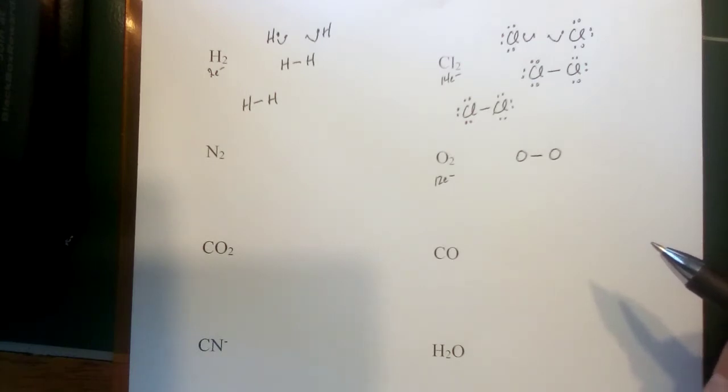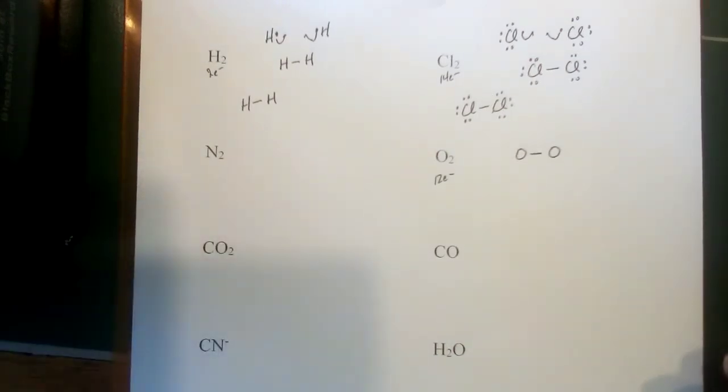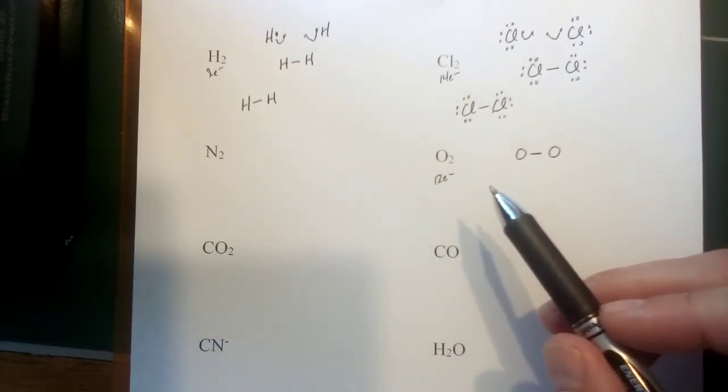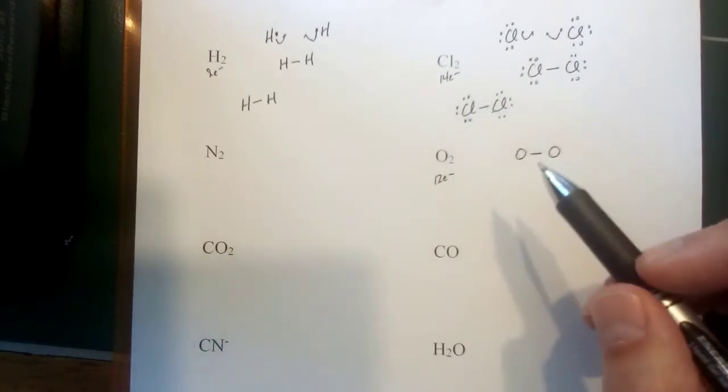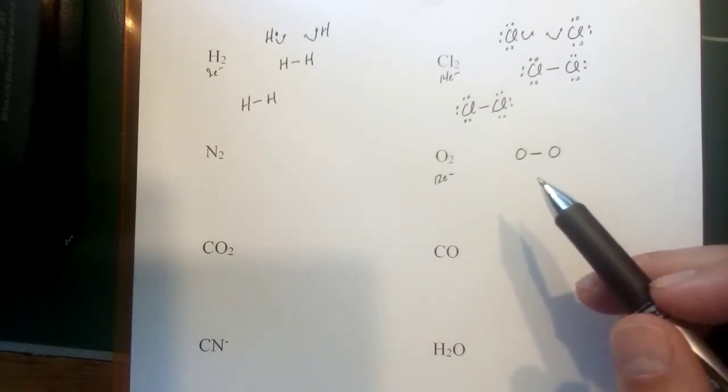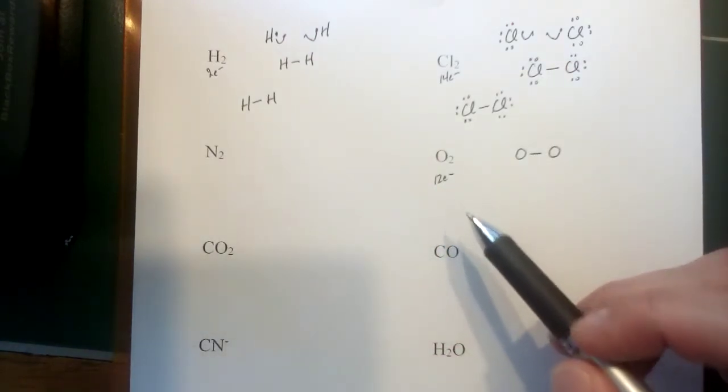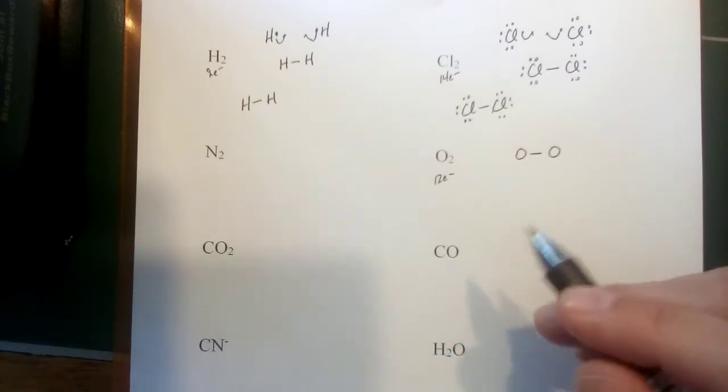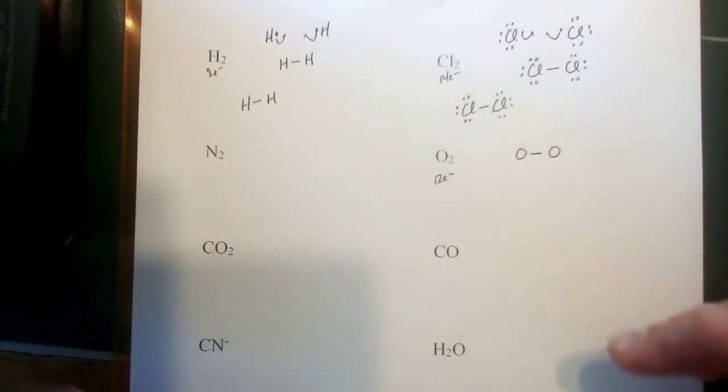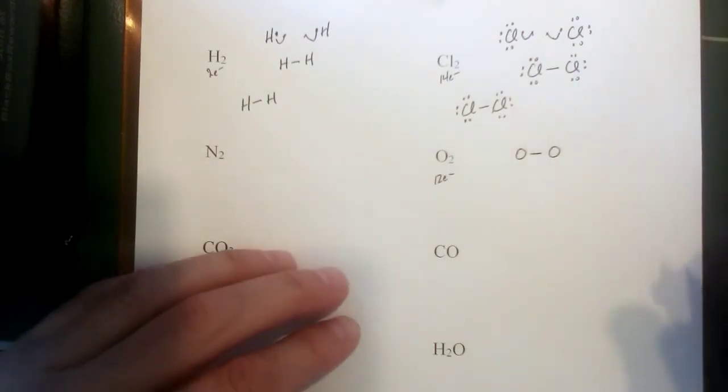Now the third rule says complete the octets of the surrounding atoms. We don't have surrounding atoms here because there's only two, but we're going to complete the octets with the remaining electrons. We used two to make a bond here, that means we have 10 left over. We refer to these electrons that aren't bonding as lone pairs usually. So the best policy as you're adding them in is to keep them in pairs. If there's a rare case where you have an odd number of electrons, you will have a single electron that's by itself. Those are generally pretty unstable molecules. But for this type of structure, keep the electrons paired.